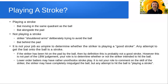Now, are they playing a good stroke? It's not your job as the umpire to determine whether the striker is or is not playing a good stroke. Any attempt to get the bat onto the ball is a stroke. If the striker's been hit on the pad by the ball, then by definition that is probably not a good stroke — if it was a good stroke, they would have hit the ball. That's not part of your LBW judgment. Your role is to determine whether or not the striker intended to hit the ball.